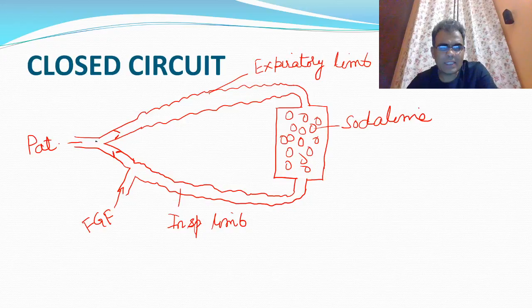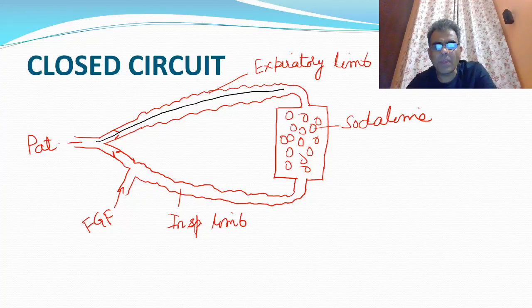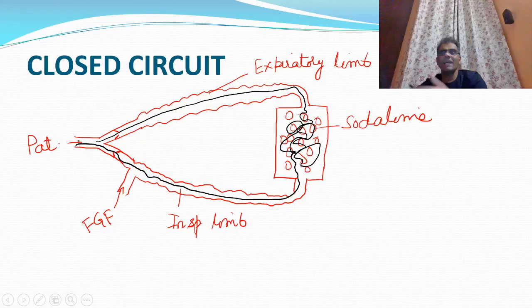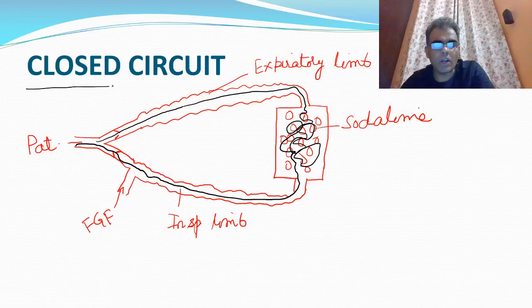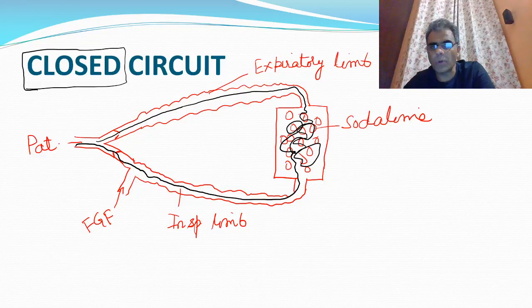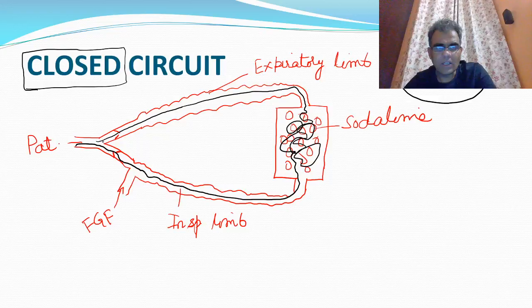The expiratory gases of the patient will pass through this expiratory limb and from there they pass through a canister containing soda lime. This soda lime absorbs carbon dioxide from these gases and the same gases can be reused. Since the gases are not venting out into the atmosphere, they are called closed circuits. The same gases are in circulation, so they are also popularly called as the circle system.